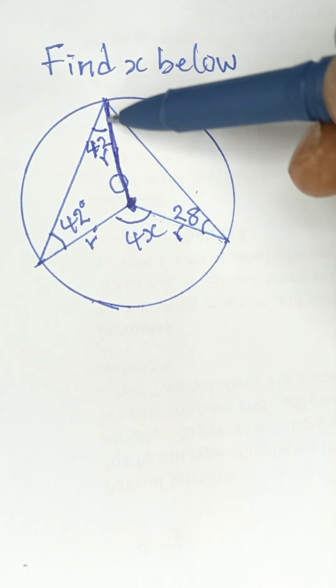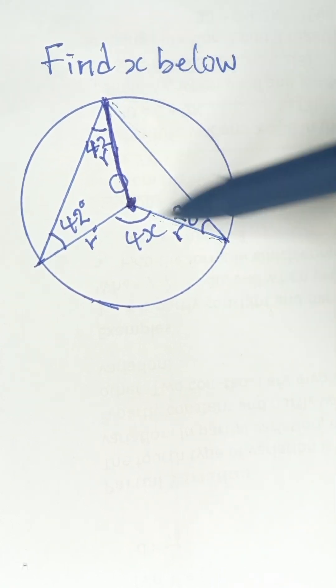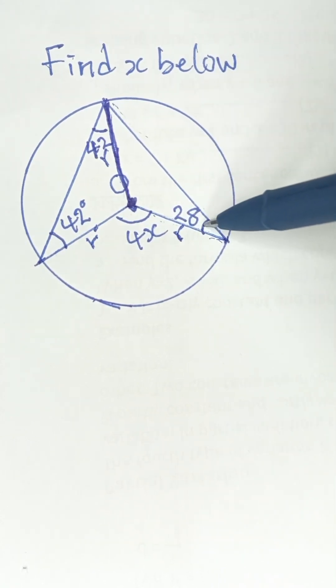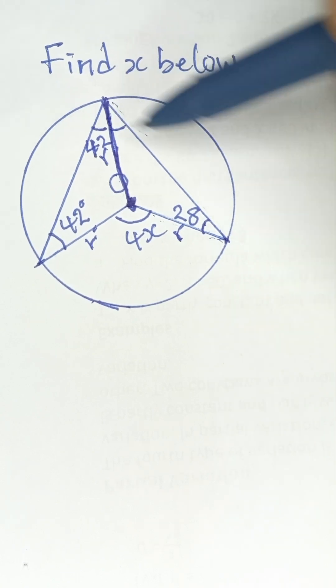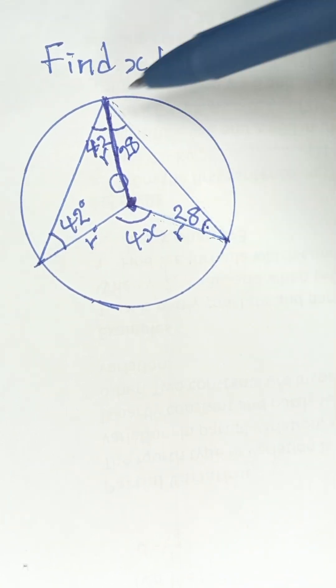Similarly, this is an isosceles triangle because this is a radius and is also the radius. This triangle is also an isosceles triangle, so the base angles will also be equal. If this is 28, this is also 28.